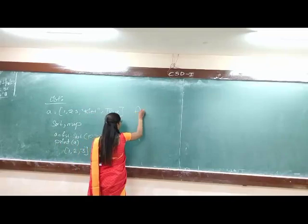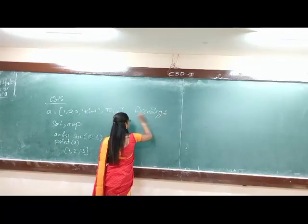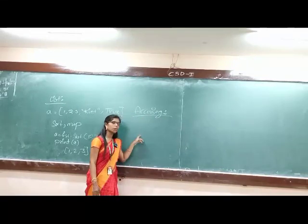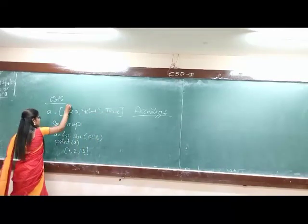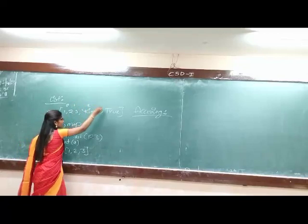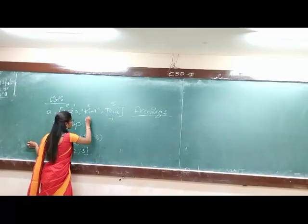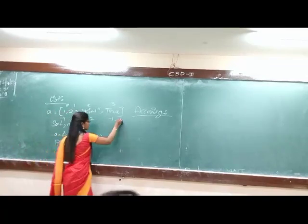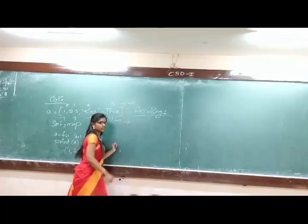Next, accessing the elements in the list. Allow accessing with the help of index. For example, if this is correct, zero, one, two, three. And here, minus one, minus two, minus three, minus four. So this is negative indexing. This is positive indexing.